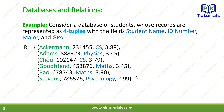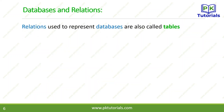The relation has fields: student name, student ID, major, and GPA. In this relation, we have six records — six ordered pairs. Each ordered pair is a four-tuple with four fields. The relations used to represent databases are also called tables.